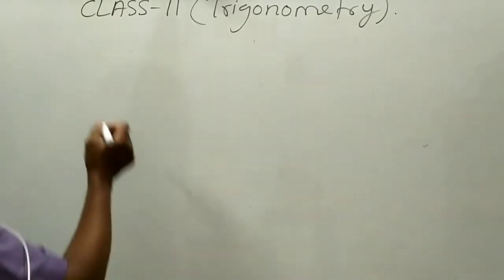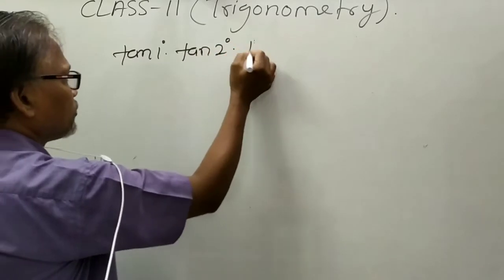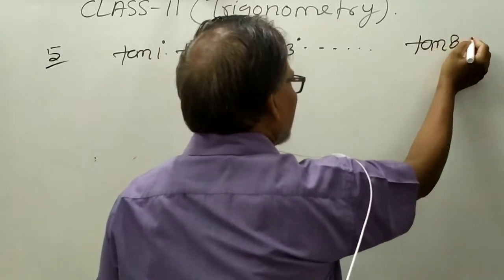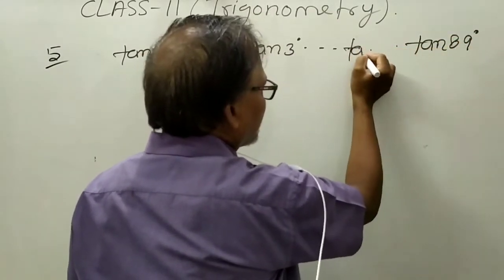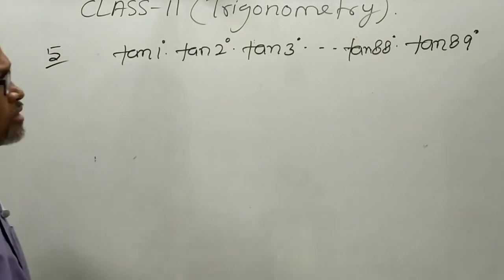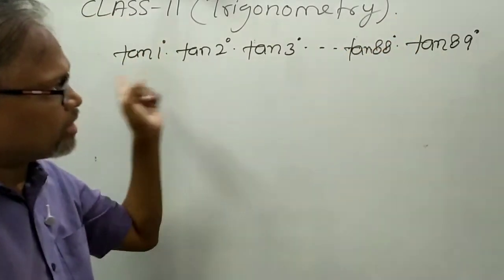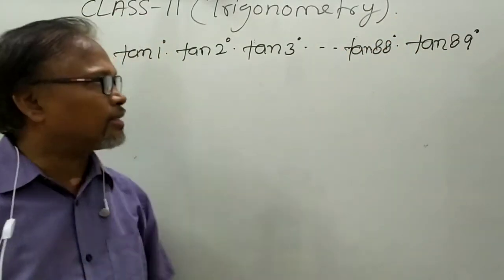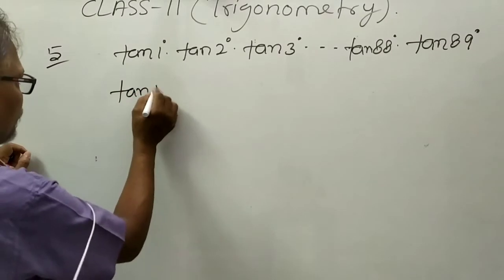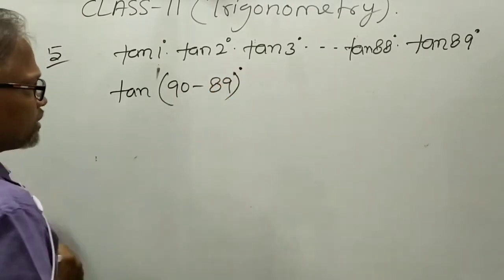For example, question number 5: find the value of tan 1° × tan 2° × tan 3° × ... × tan 88° × tan 89°. You know the complementary angle formula. So tan 1° can be written as tan(90° − 89°), and tan 2° as tan(90° − 88°), and so on.